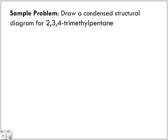Okay, let's look at the last sample problem. Draw a condensed structural diagram for a 2,3,4-trimethylpentane. So take a moment and work this one out. So, remember what we said, first things first. Let's start with our main chain. Our main chain is pentane, which means we've got 5 carbons.